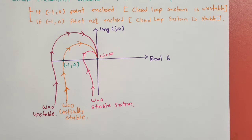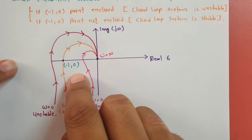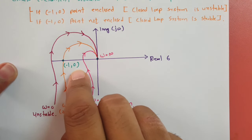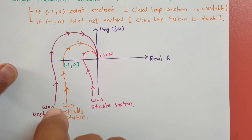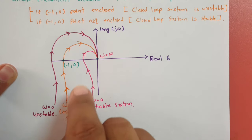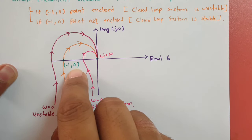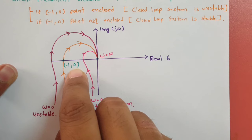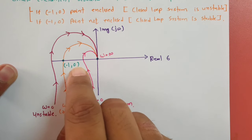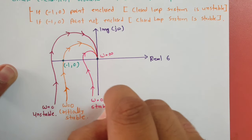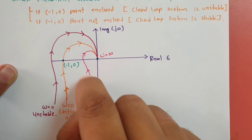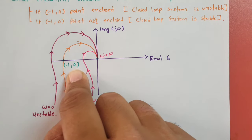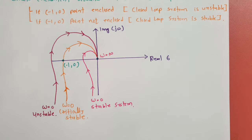To summarize: stability is identified with respect to the minus 1 comma 0 point. If the minus 1 comma 0 point is enclosed by the polar diagram, the system is unstable. If it is not enclosed, the system is stable.